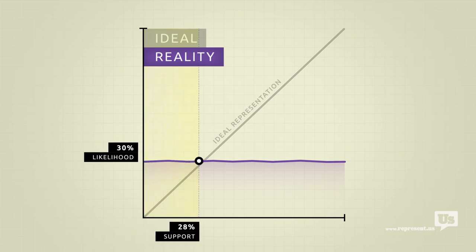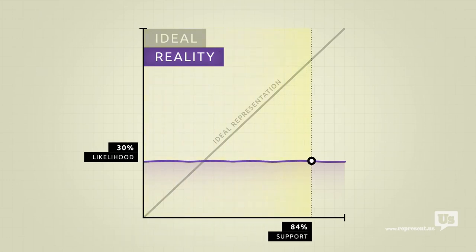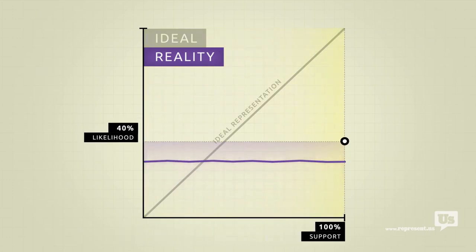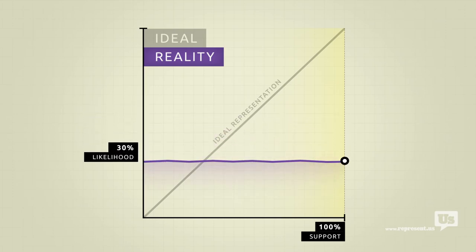Now, take an incredibly popular idea, the most popular idea this country has ever seen, and there's also about a 30% chance of it becoming law. This means that the number of American voters, for or against any idea, has no impact on the likelihood that Congress will make it law.